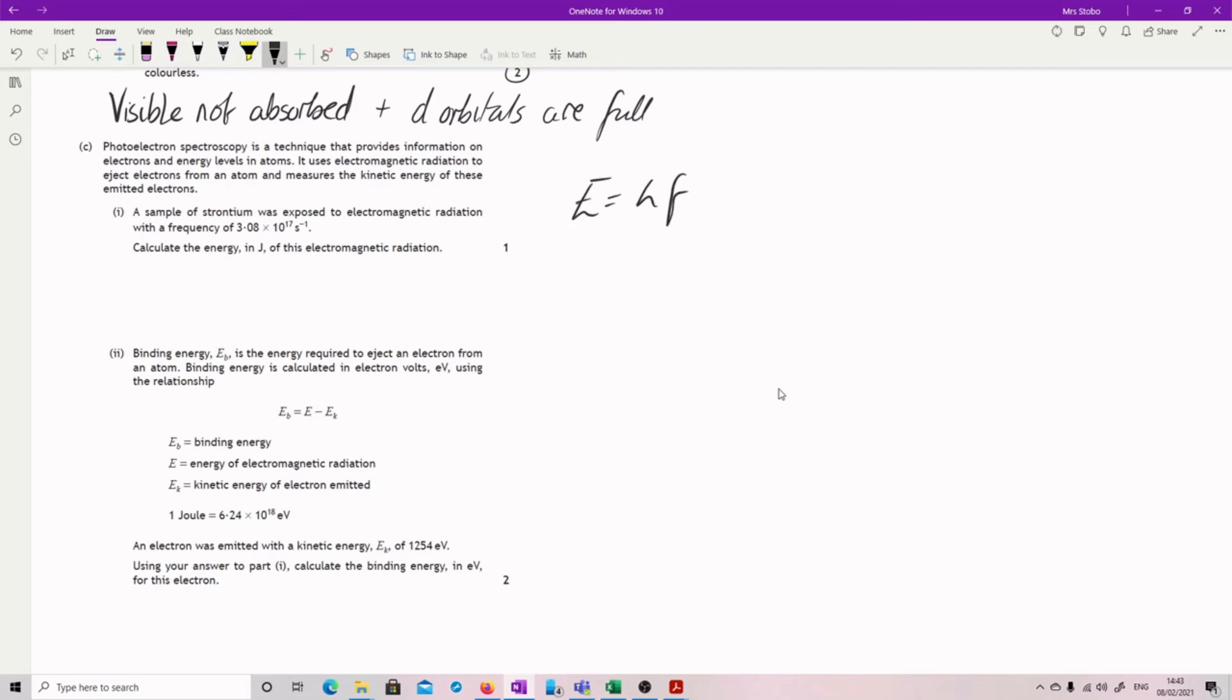So go find Planck 6.63 times 10 to the -34. And Planck, it will tell you, is in joules second. And then multiply it by our actual frequency here. So 3.08 times 10 to the 17 gives us an answer at 2.04 times 10 to the -16 joules.